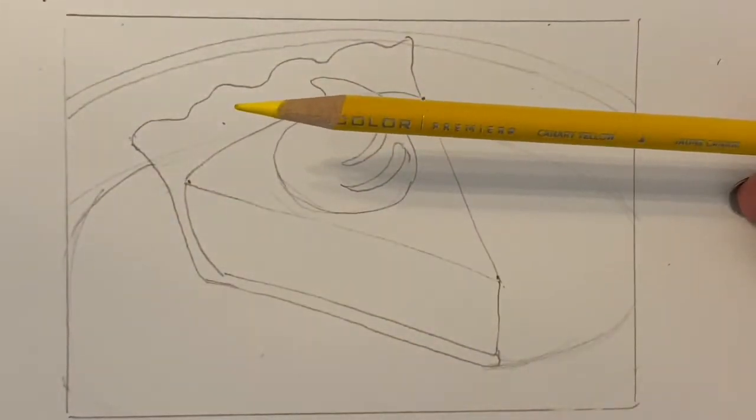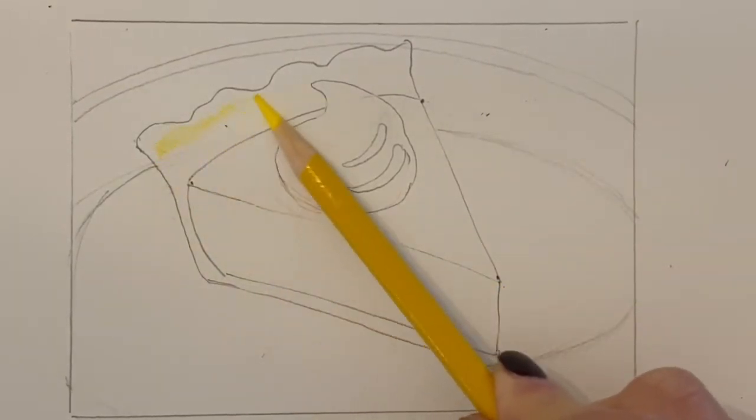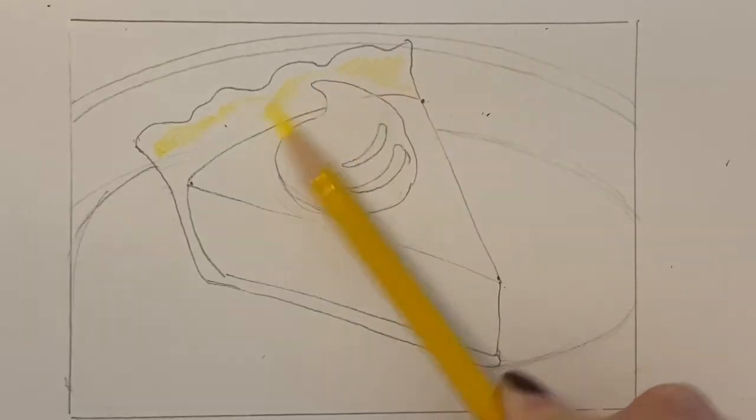The first color I use is going to be yellow and I'm going to color in every area of the pie except for the very top of the crust, which I'll leave white.